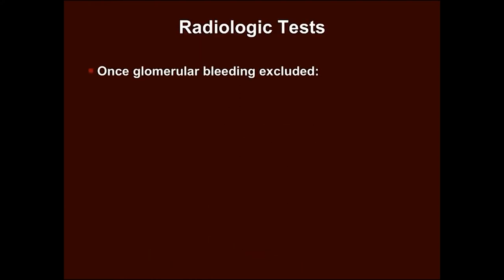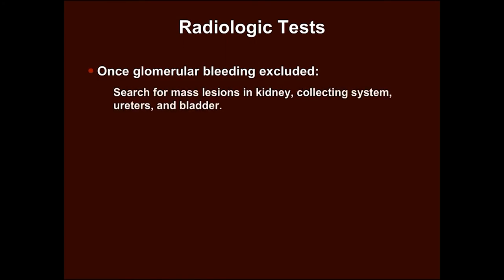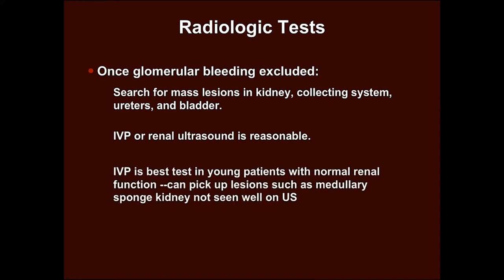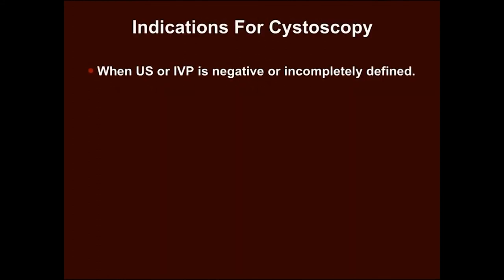Once glomerular bleeding is excluded, search for mass lesions in the kidney, collecting system, ureters and bladder. If there is no specific clue, an intravenous pyelogram or renal ultrasound is reasonable. IVP is the best test in young patients with normal renal function; it can pick up lesions such as medullary sponge kidney not seen well on ultrasonography. CT scan is needed for diagnosing tumors less than 3 cm. When ultrasonography or IVP is negative or incompletely defined, cystoscopy is indicated.